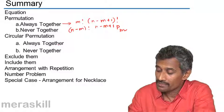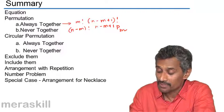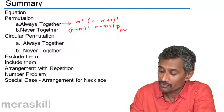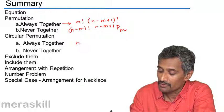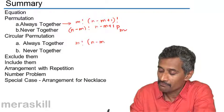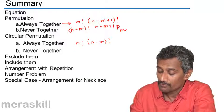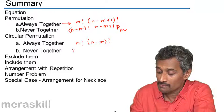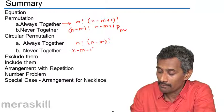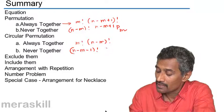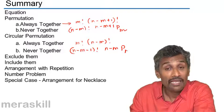And for always together, in each of these, in case of circular permutation, we reduce this by 1, so this is going to be m factorial into n minus m factorial, this one, for never together, in case of circular permutation, is n minus m minus 1 factorial, and n minus m p m.